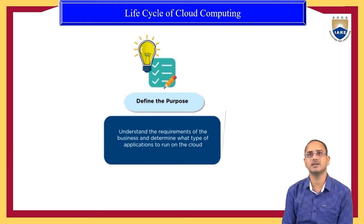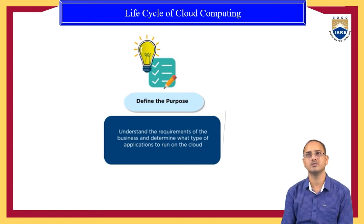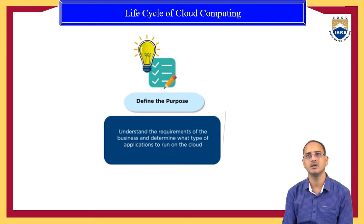The first step of the life cycle of cloud computing is defining the purpose of the cloud computing. We need to understand the requirements of the business and determine what type of application to run on the cloud. First, we need to understand whether we can go for a cloud environment or not, and if so, what requirements made us move to the cloud. According to our business requirement, which particular deployment model fits — we have seen three deployment models and three service models.